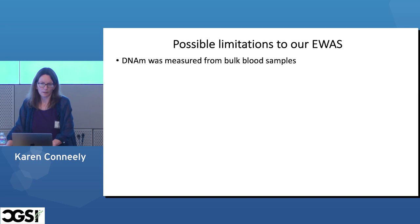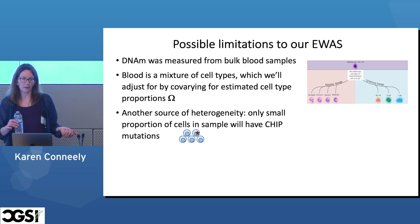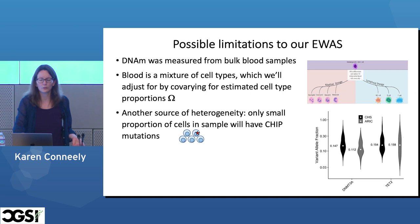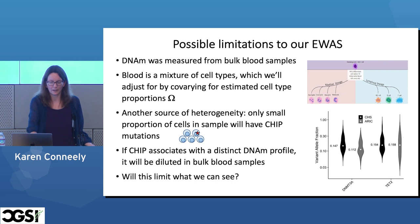There are a couple of possible limitations to our proposed EWAS. DNA methylation was measured in bulk blood samples — blood is a mixture of different cell types and we adjust for this by covarying for estimated cell type proportions. Another source of heterogeneity is that only a small proportion of the cells in our sample are going to have the CHIP mutation. The variant allele frequencies in our sample for both CHS and ERIC for each mutation are just around or under 15%. This means that cells with CHIP are going to be diluted by cells that don't, so we're probably going to see a diluted version of the methylation profile — this could potentially reduce our power.